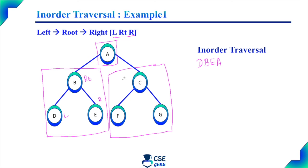Now move to the right subtree. In this right subtree, root node is C, left child is F, and right child is G. So first it will print the left child F, then root node C, then right child G. This is the inorder traversal output for this given binary tree.